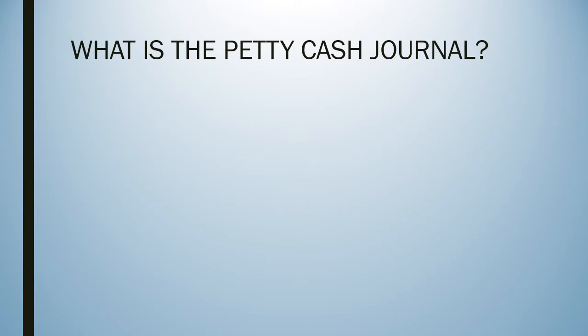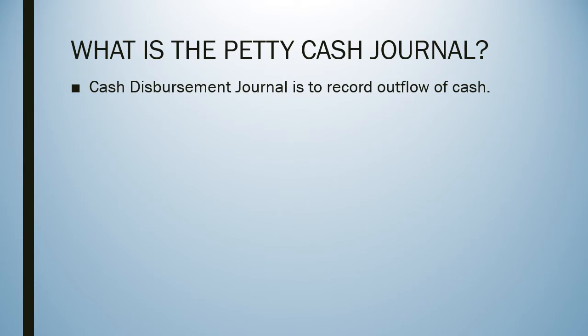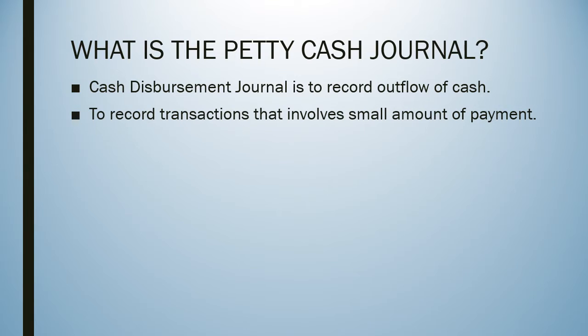So what is the petty cash journal? Normally we use the cash disbursement journal — also called the cash payment journal — to record the outflow of cash, whether cash in hand or cash at bank. However, there are some very small amounts of cash spent in a business, and these small or 'petty' amounts are not really suitable to record in the cash disbursement journal. For those transactions involving very small payments, we use the petty cash journal.